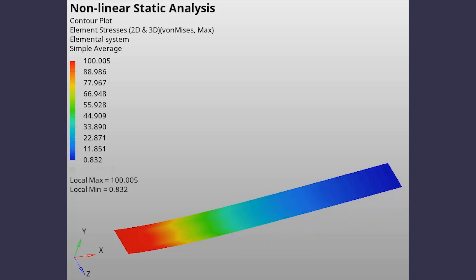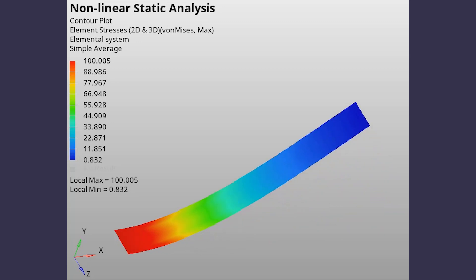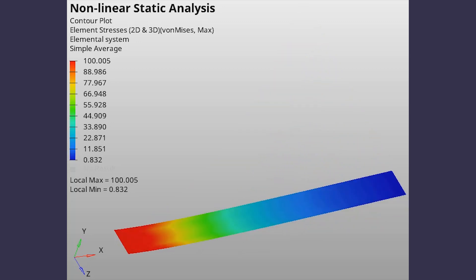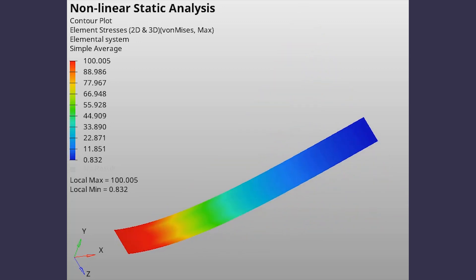Non-linear analysis is more reliable than linear static analysis as it provides realistic results and can predict the behavior of a component in real life conditions. In this video, we will perform a non-linear static analysis using HyperMesh and OptiStruct. The main objective will be to calculate the deformation and plastic strain in a cantilever plate component.